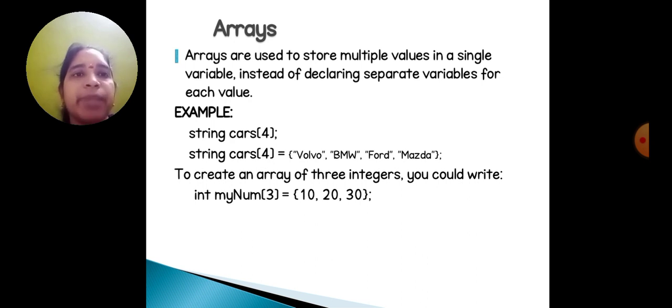String cars bracket four: Volvo, BMW, Ford, Mazda. To create an array of three integers, you can write: int myNumber 3 equals 10, 20, 30.